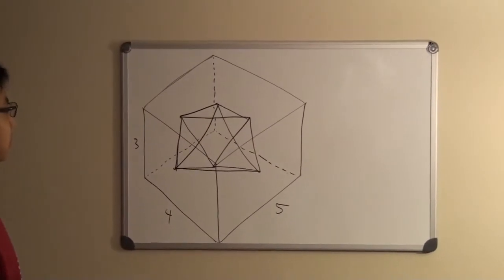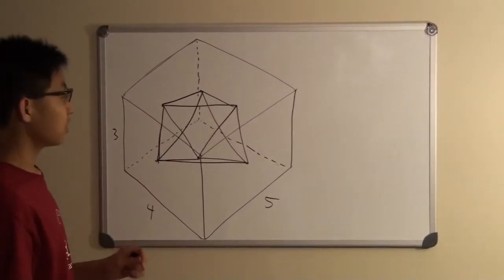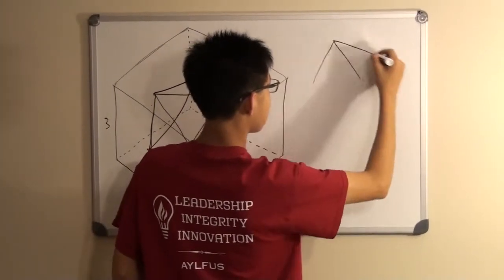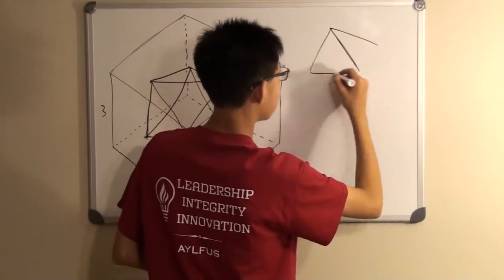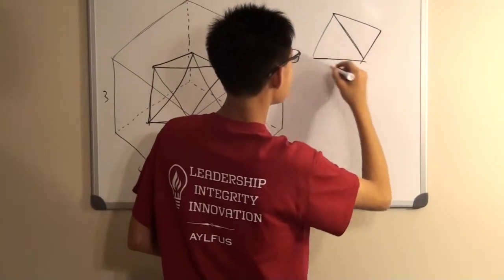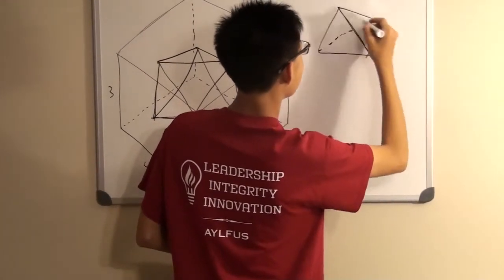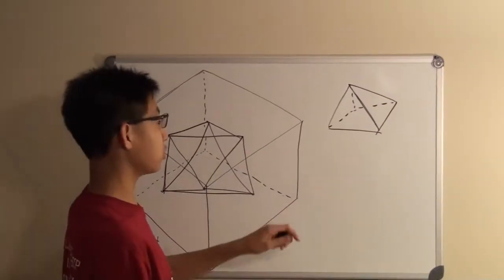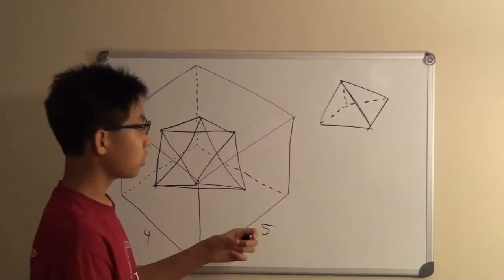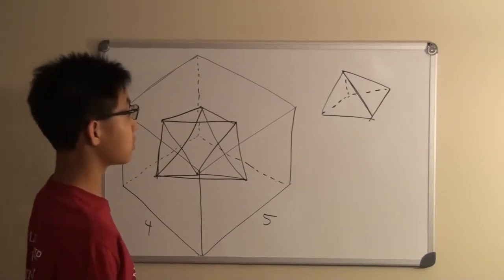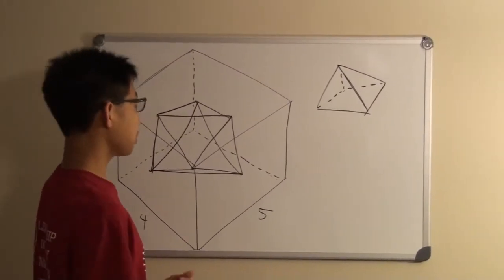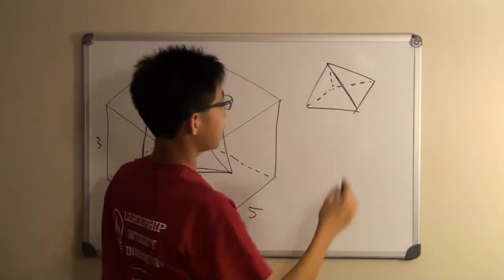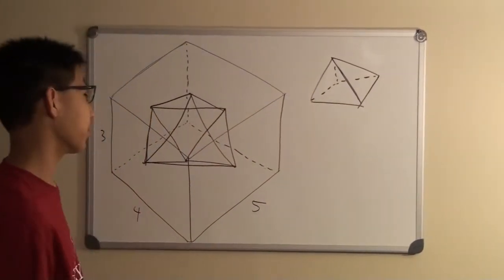Okay, so this can be a little bit hard to imagine, but really what it is is just two pyramids that have a rhombus as their base, but they're basically glued onto each other by their base. So what we really need to do is find the area of one of these pyramids and then multiply it by two, and then we're done.